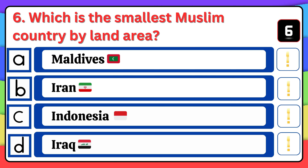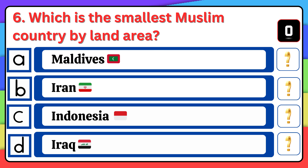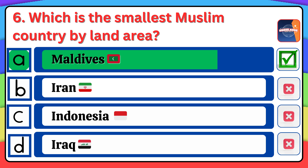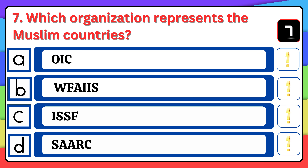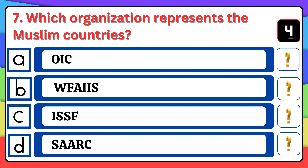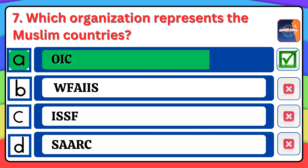Arabic is the national language of how many Islamic countries? The right answer is option B, 25. Which is the smallest Muslim country by land area? The answer is option A, Maldives.